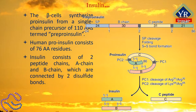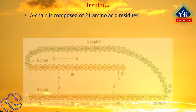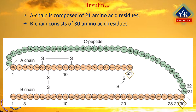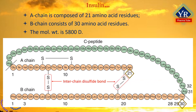Insulin thus consists of two peptide chains, A chain and B chain, which are connected by two disulfide bonds. The A chain is composed of 21 amino acid residues, while the B chain consists of 30 amino acid residues. The molecular weight is 5800 Da. The inter-chain disulfide bonds are formed at cysteine residues between positions cysteine A7 to cysteine B7 and cysteine A20 to cysteine B19.